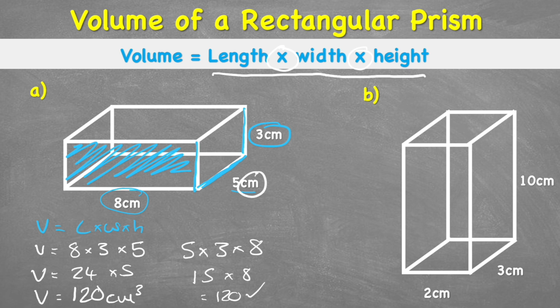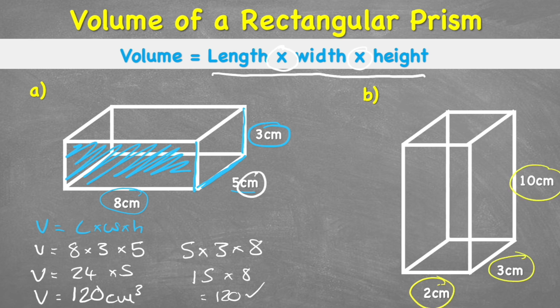Okay, let's look at the same thing for question 2. This time we have 2cm, 3cm and 10cm. So I can do my volume equals length times width times height or volume equals 2 times 3 times 10. Therefore volume equals 6 times 10. Volume equals 60 centimetres cubed. Easy.